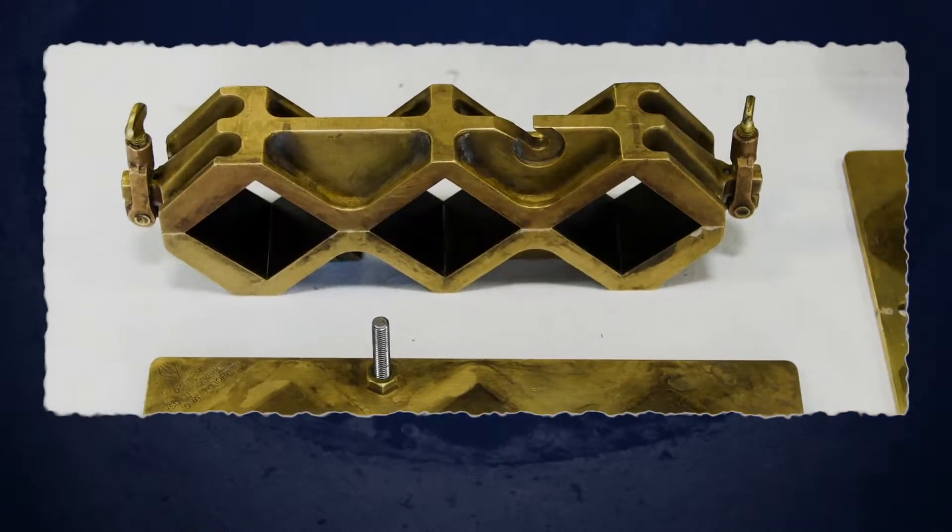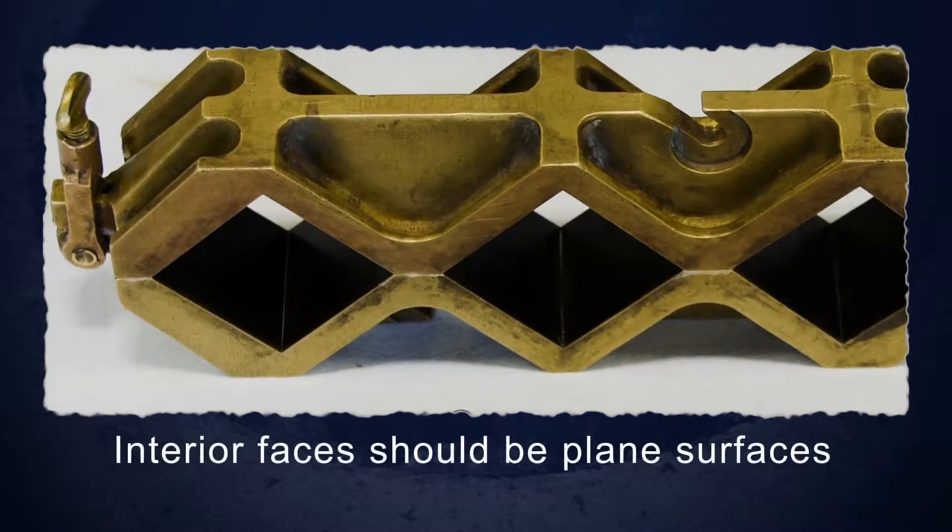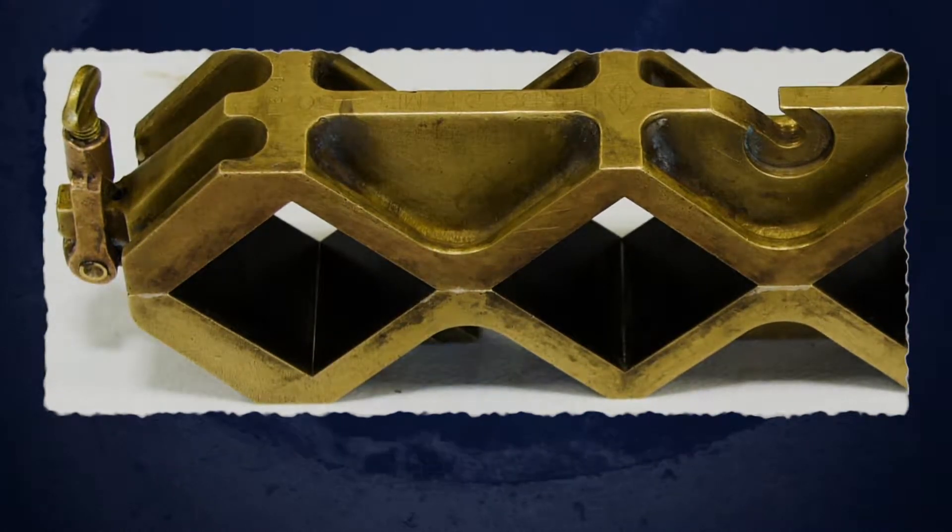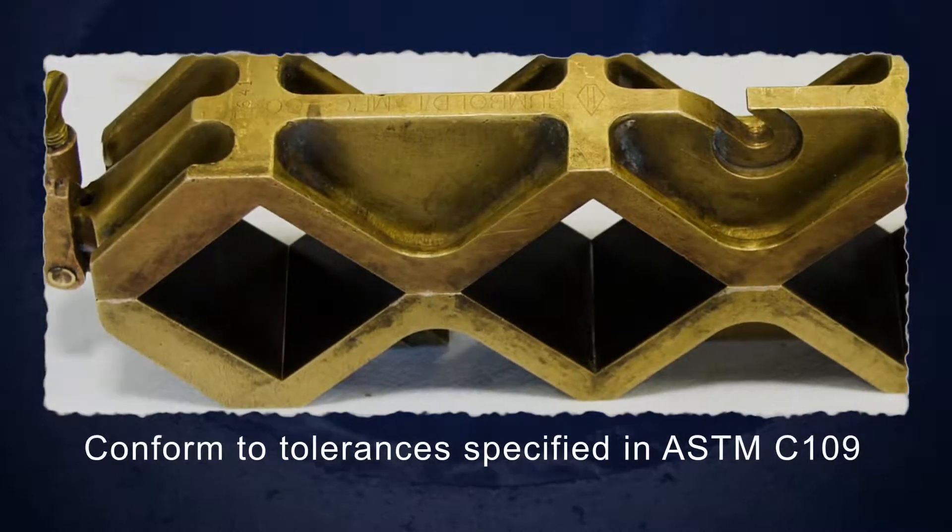The sides of the mold should be sufficiently rigid to prevent spreading and warping. The interior faces of the mold should be plain surfaces and conform to the tolerances specified in ASTM C109.